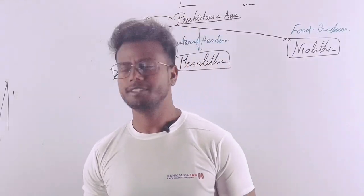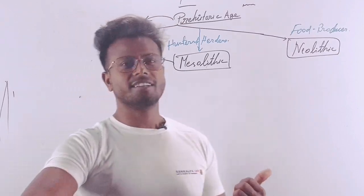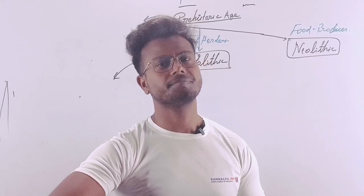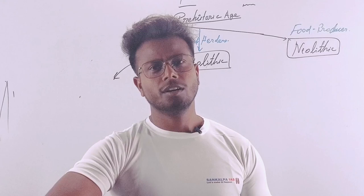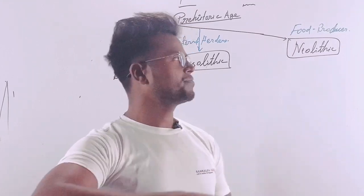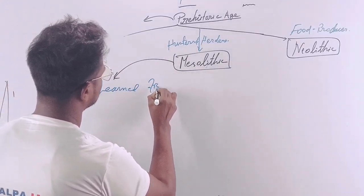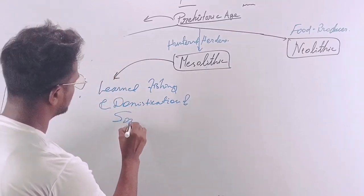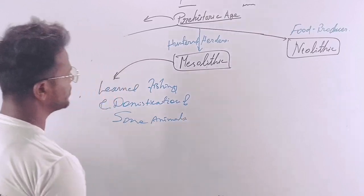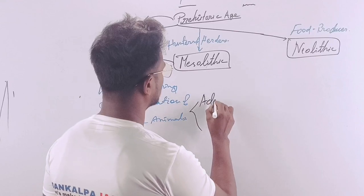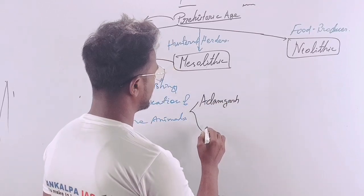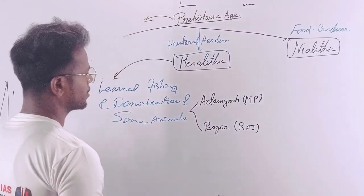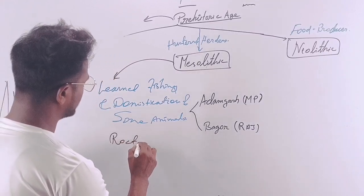The Mesolithic is a transition phase between the Paleolithic and Neolithic age. During this period, temperature rose and the climate became warm, leading to the melting of ice. People of this age learned fishing and the domestication of some animals. Famous sites include Adamgarh in Madhya Pradesh and Bagor in Rajasthan.